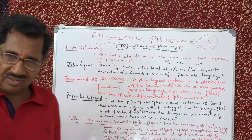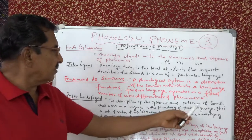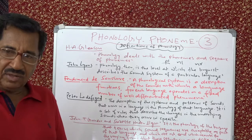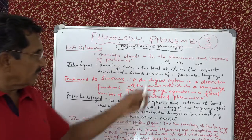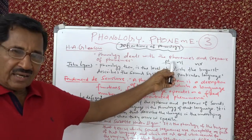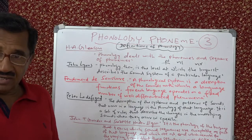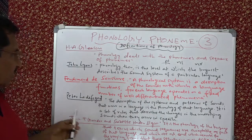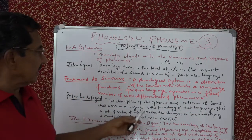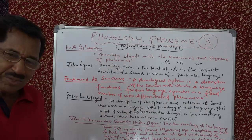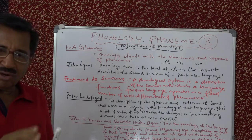Peter Ladefoged defines phonology as the description of the systems and patterns of sounds that occur in a language. Systems of sounds include groups and classes — vowels, diphthongs, consonants. Patterns are sequences: PL, NR, NL — ML is not allowed in English in word-initial position. Language-specific is a very important word — sounds must belong to a particular language to be called phonemes.